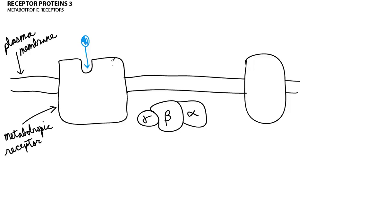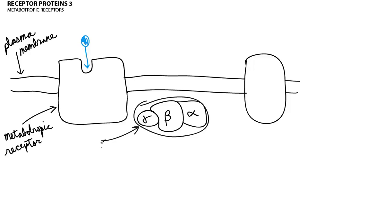With a metabotropic receptor, when the neurotransmitter binds, we do not get the opening of a channel like we did in an ionotropic receptor. In other words, the metabotropic receptor does not function as an ion channel. Rather, when the neurotransmitter binds to the metabotropic receptor, that causes this structure to be activated. This is known as a G-protein, and when the neurotransmitter binds, that causes activation of the G-protein.